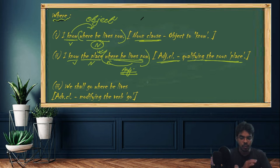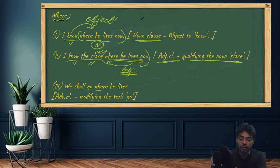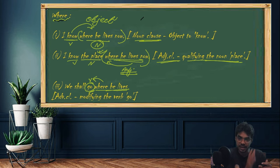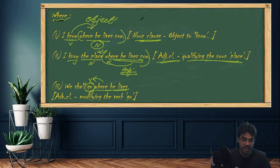What about the adverbial clause? It's very simple: 'We shall go where he lives.' The trick is catch the verb. Here 'where he lives' is qualifying the verb 'go'. As it's qualifying the verb and it's speaking of a place, it's an adverbial clause — specifically, an adverbial clause of place. That's the very simple trick.